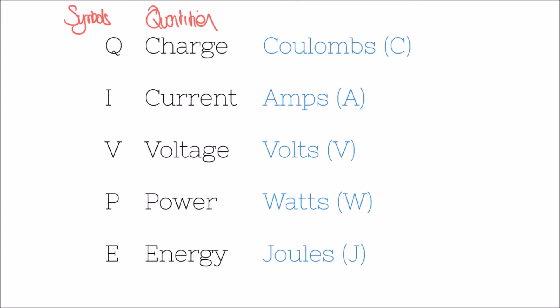We're going to see how these five quantities relate to one another and look at some different formulas and examples of how we can calculate these quantities. The other thing to mention is the units these quantities are measured in: charge is measured in coulombs (C), current in amps (A), voltage in volts (V), power in watts (W), and energy in joules (J).